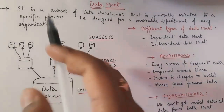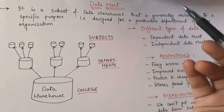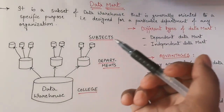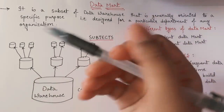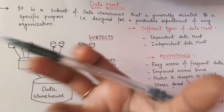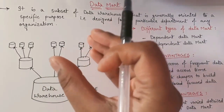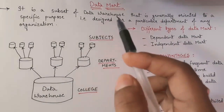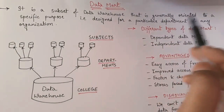First of all, let's see what is data mart — what is actually the definition of data mart. We can say that data mart is a subset of data warehouse that is generally oriented to a specific purpose, designed for a particular department of any organization. Data mart is nothing but a subset of data warehouse. We know that data warehouse is all about bulk of data.